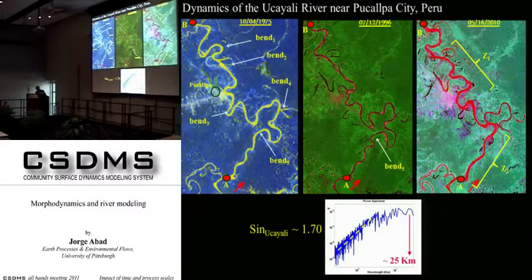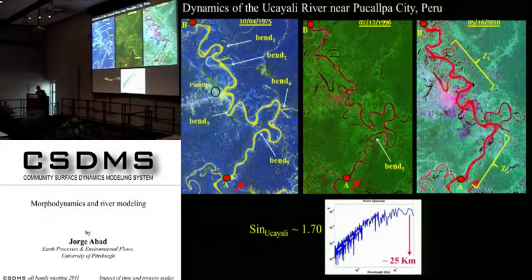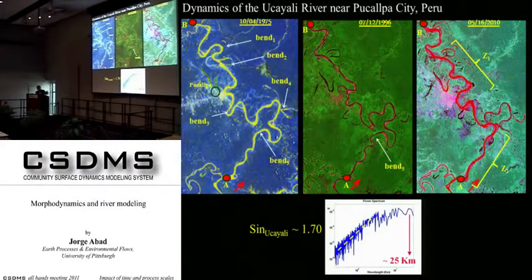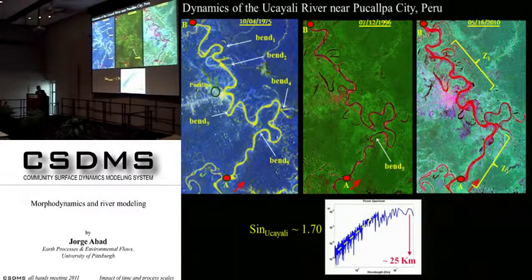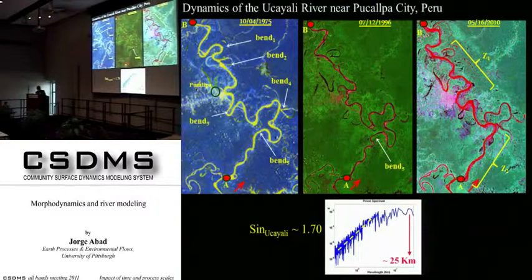If we perform a power spectrum analysis based on the channel centerline, for the Ucayali River in this area, the dominant wavelength is around 25 kilometers, given a sinuosity of 1.7.